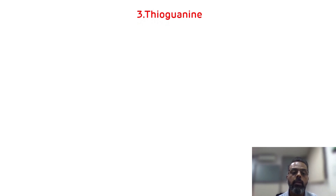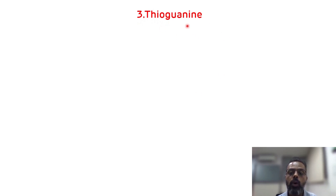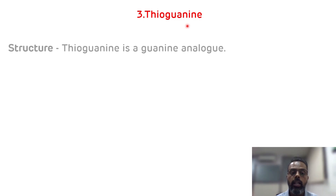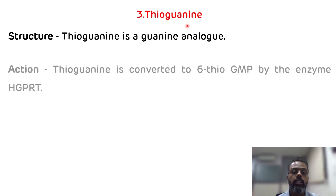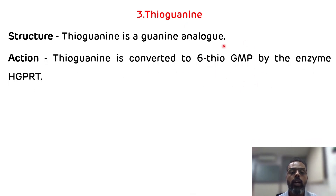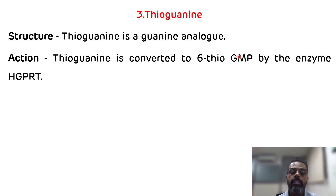The third example is thioguanine. As the name suggests, thioguanine is a guanine analog. Its mechanism of action: thioguanine is converted to 6-thioguanosine monophosphate by the HGPRT enzyme — hypoxanthine-guanine phosphoribosyltransferase. This 6-thioguanosine monophosphate will inhibit the conversion of IMP to GMP.